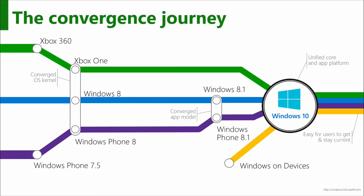The journey to get where we are has been an exciting one. We've been on this road for a long time, getting our different device families converged. Going back to Windows Phone 7.5 and Xbox 360, we had convergence around Internet Explorer. With Windows Phone 8, Windows 8, and Xbox One, we got deep integration down to the operating system level — right down at the drivers, it was the same kernel. Moving on to Windows 8.1, things really got interesting for developers because there we had the converged app model, building universal apps using the same WinRT API set.